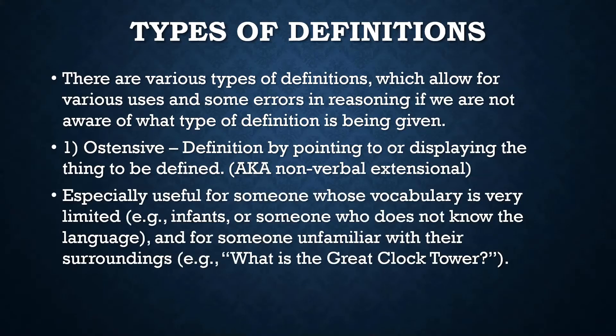Ostensive definition is especially useful for someone whose vocabulary is very limited. When a toddler first begins to learn words, or someone who doesn't know the language, you point to things and say the word — you point to a ball and say 'ball.' It could also be an adult in an unfamiliar surrounding who's supposed to meet someone at the great clock tower but doesn't know where it is, and someone just points to it so they can see it.